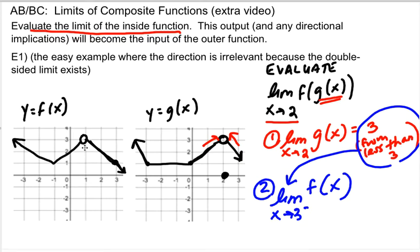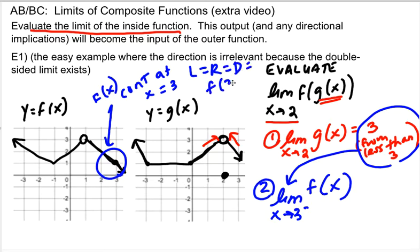Now I did say in this example, it doesn't matter what the direction is. The reason it doesn't matter what the direction is here is that f is continuous at 3. So f(x) is continuous at x equals 3. So what that means is that the left-sided limit is the same as the right-sided limit is the same as the double-sided limit is the same as the function's actual value at 3. So the reason it didn't matter in this case, if you noticed from the left, is that all of the answers are going to be a 1 anyway. Even if you didn't spot the from the left, even if you only spot that you were supposed to be checking what's happening at 3, you would still get an answer of 1.